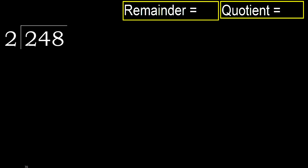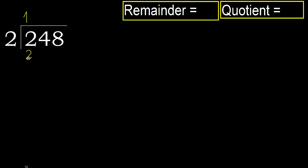248 divided by 2. 2 is not less, therefore work with 2. 2 multiplied by which number is nearest to 2 but not greater? 2 multiplied by 2 is 4, which is greater. 2 multiplied by 1 is 2, which is not greater. Subtract.